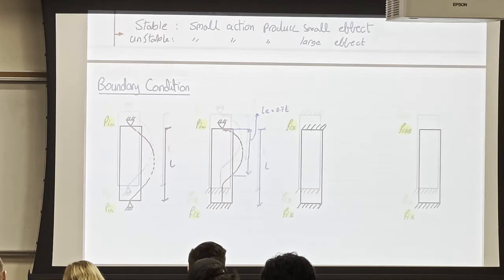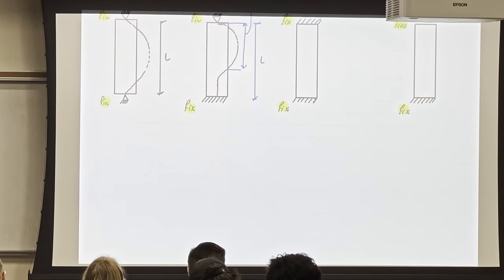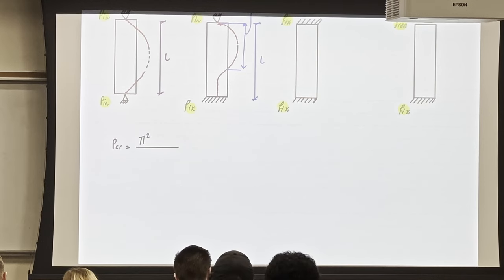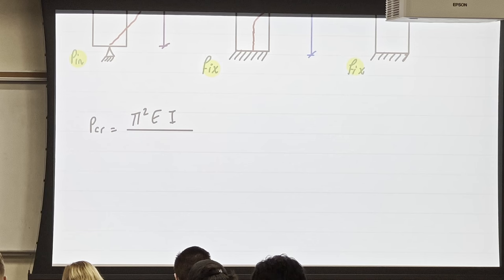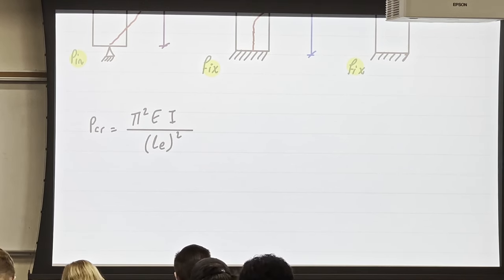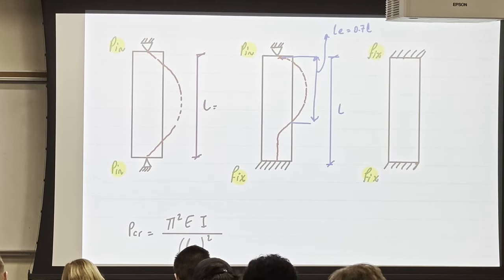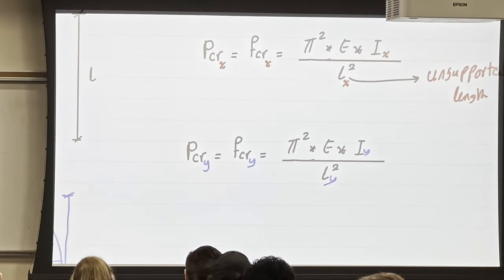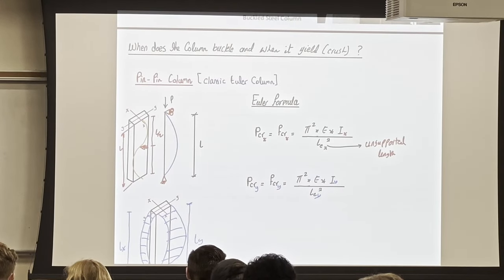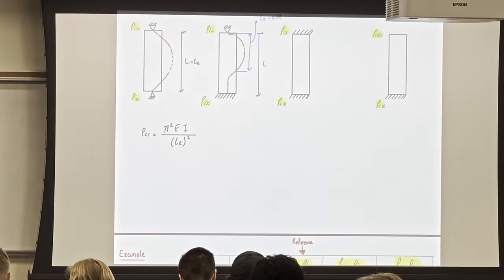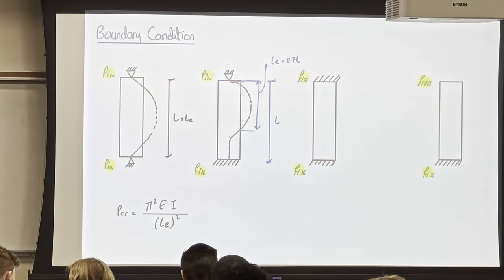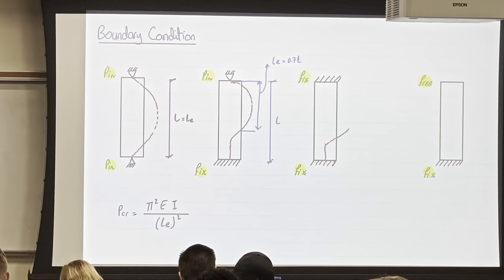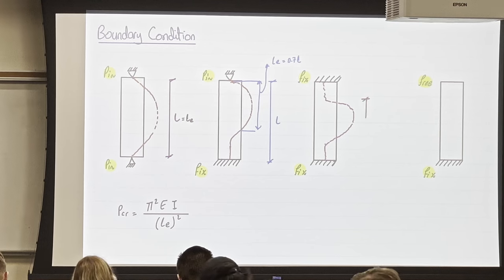We generalize PCR as π²EI divided by LE², where LE is the effective length. For pin-pin, LE equals L, so the equation is unchanged. For fixed-pin, LE equals 0.7L, meaning you see about 70% of the full parabola. For fixed-fixed, LE equals 0.5L. And we need to introduce the last boundary condition as well.